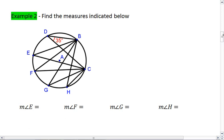How about this one? We want to find the measures indicated below. So in circle A, we're told that BDC is 35 degrees, which means its intercepted arc is double that, is 70 degrees.